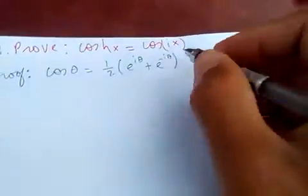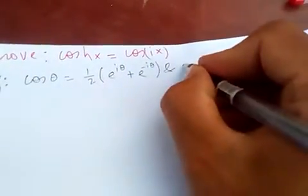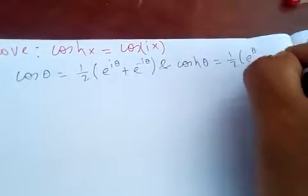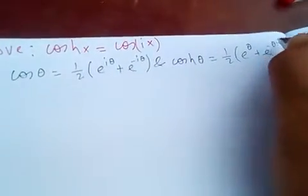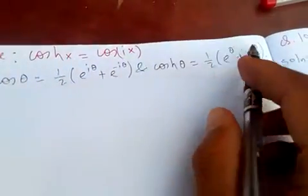This is Euler's formula for cosine and sine. Now, cosh θ = (1/2)(e^θ + e^(-θ)). The difference is only the i - there's no i in the hyperbolic version.